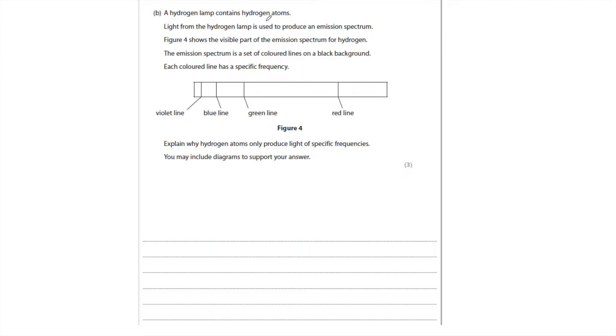A hydrogen lamp contains hydrogen atoms. Light from the hydrogen atom is used to produce an emission spectra. Figure four shows the visible part of the emission spectra of hydrogen. So you can see it produces four different coloured lines. The emission spectra is a set of coloured lines on a black background. Each coloured line has a specific frequency. Explain why hydrogen atoms only produce light at specific frequencies. You may include diagrams to support your answer. When it says that, it's giving you a hint that actually it's much easier if you do that. So I'm going to sketch a diagram, then I explain what I would write.